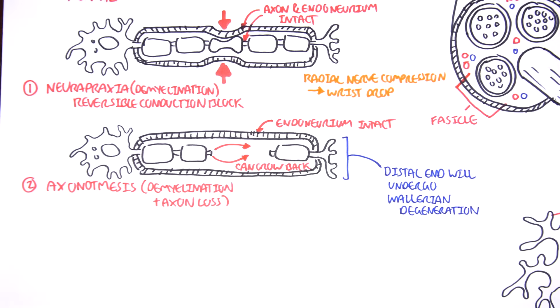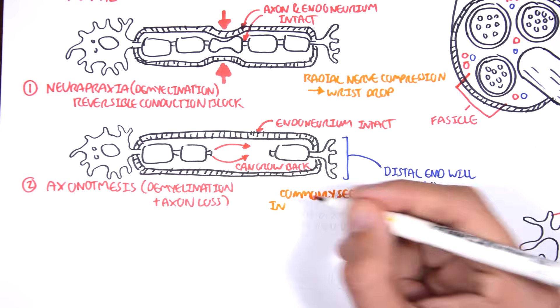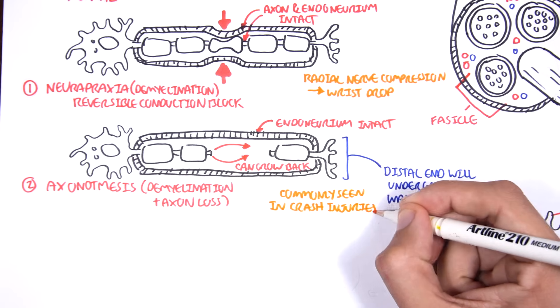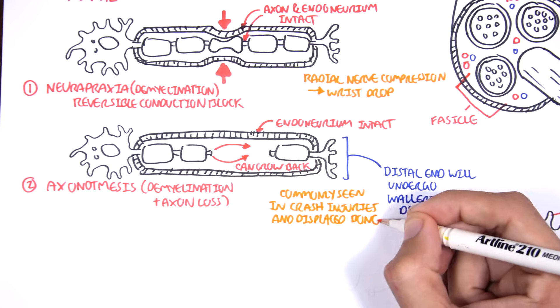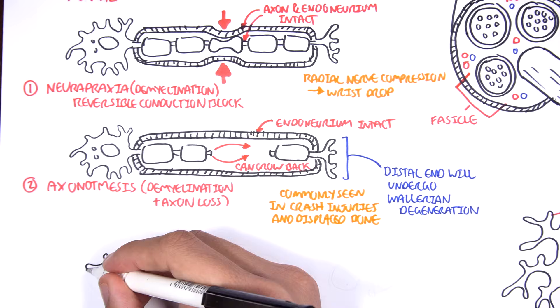This second type of nerve injury is commonly seen in crash injuries and displaced, basically, bone, when you have fracture.